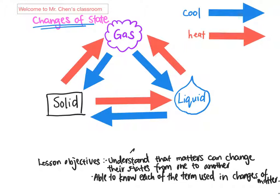As you know, matter can be divided into gas, solid, and liquid. And they actually can change from one form to another dependent on situations. The situation here mainly refers to how much energy is lost or gained, which in this term we use cooling and heating.